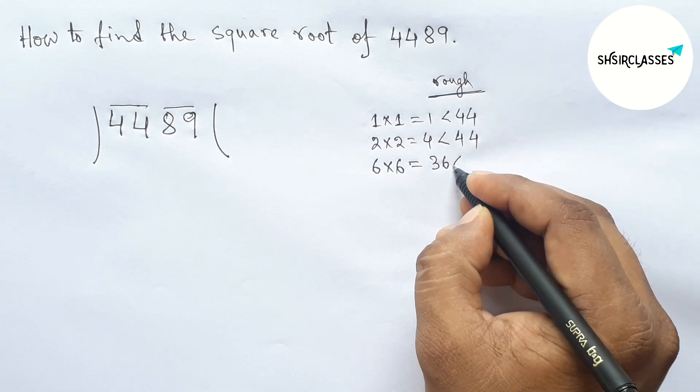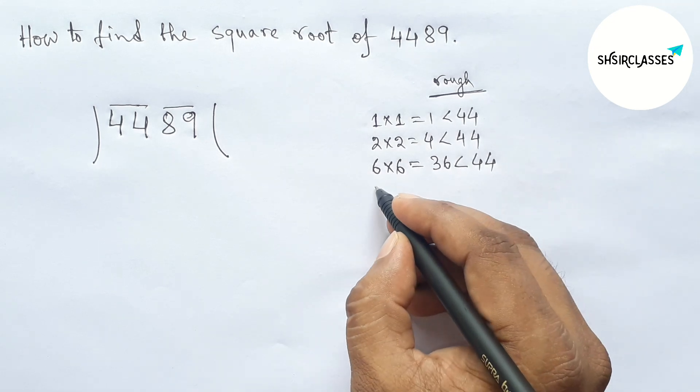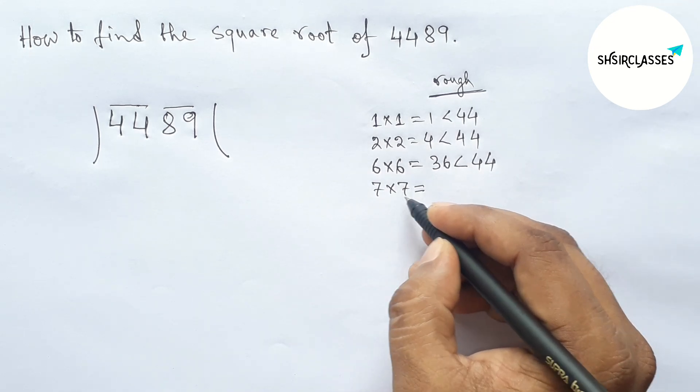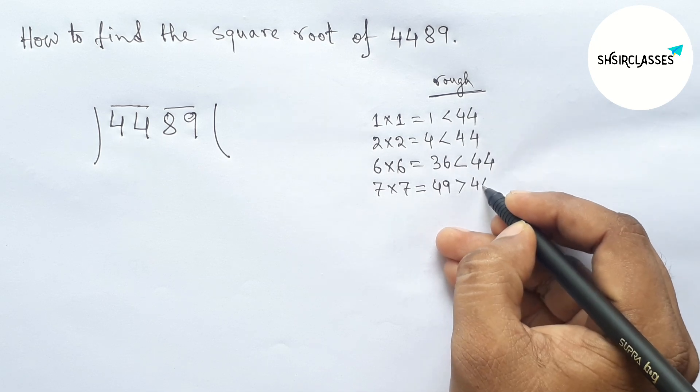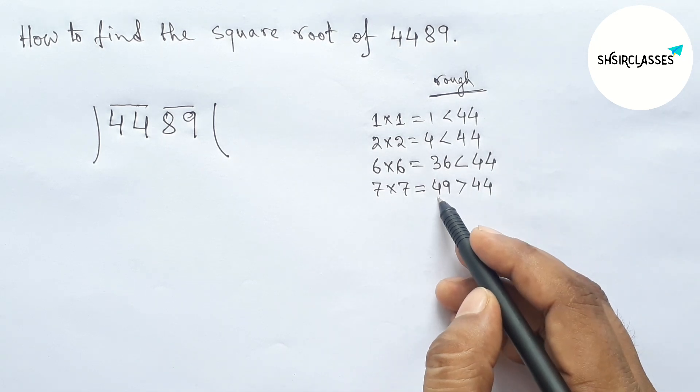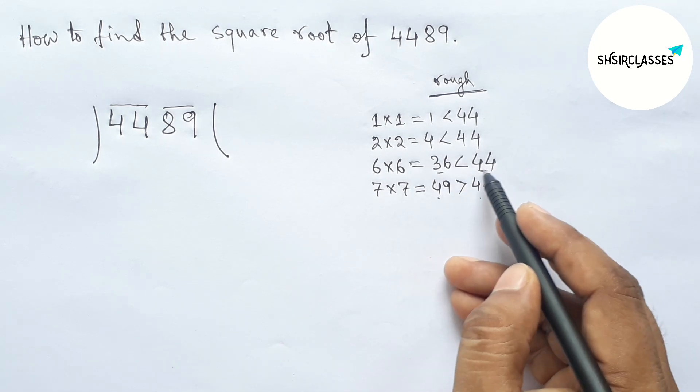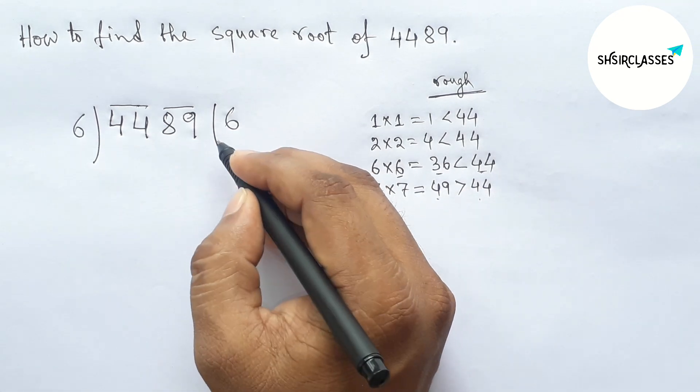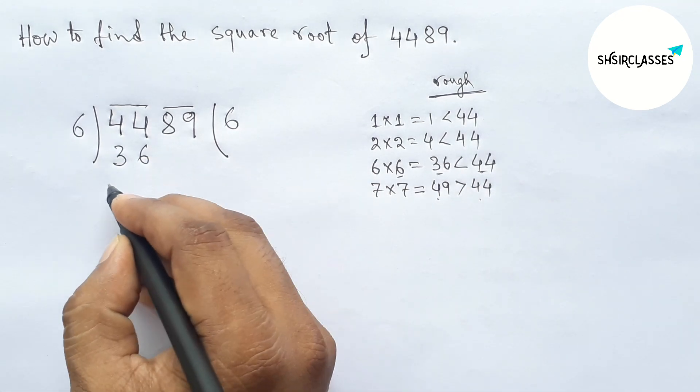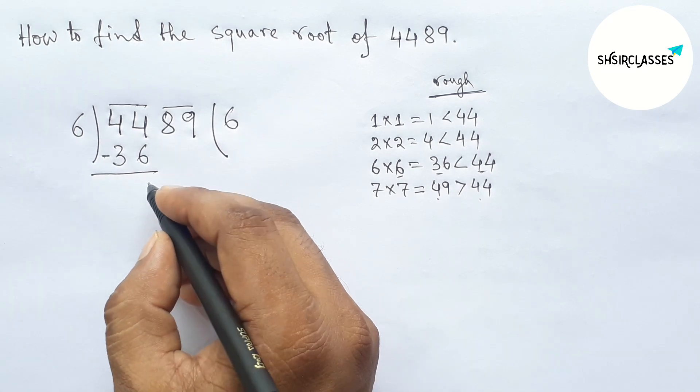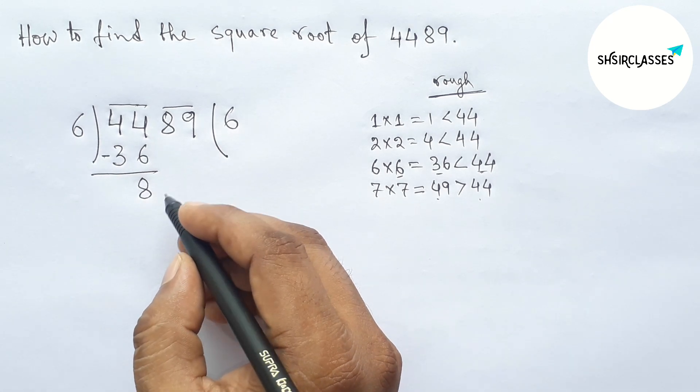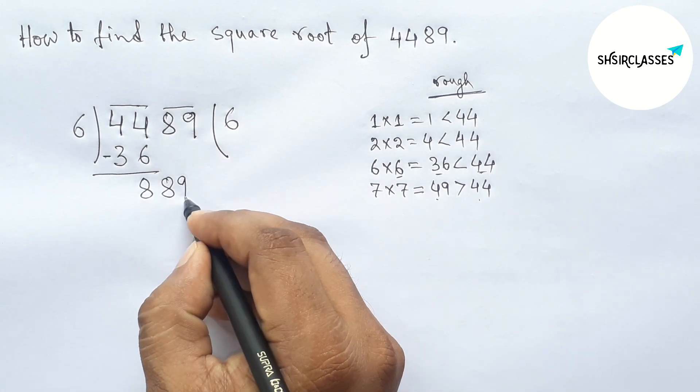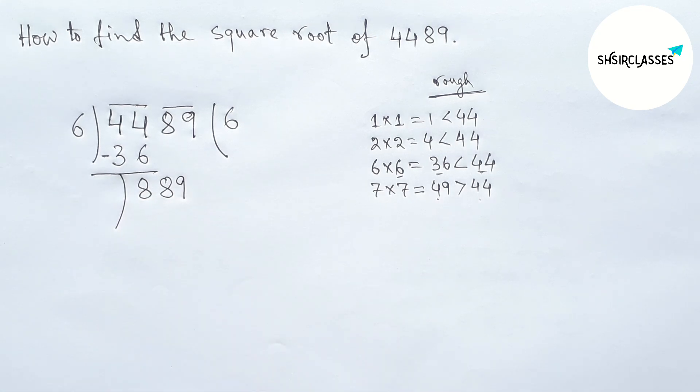Now taking 7 and checking it, so 49 which is greater than 44, so this is greater than. So this is more closer to 44, so we should take here 6. 6 times 6 is 36. Now subtracting this, so here 8, and write down here the second pair of numbers and drawing here the division line.